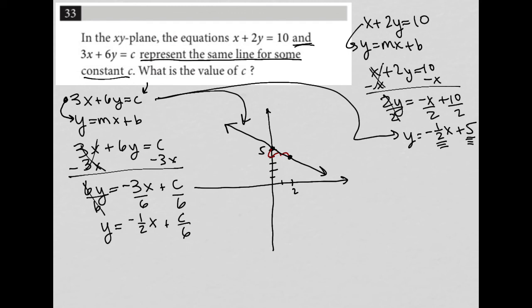So we can see that the first portion of the equation, y equals negative 1 half x, matches for both of these. It's just this last part, c over 6 and 5. But we know that these equations, we want to be equivalent because they're going to represent the exact same line. So that gives me the next and final step of my problem here, which is how do I get c over 6 to equal 5? Well, I just multiply both sides by 6 here. And I'm left with c equals 30. So that's the c value that makes both of those equations the same.